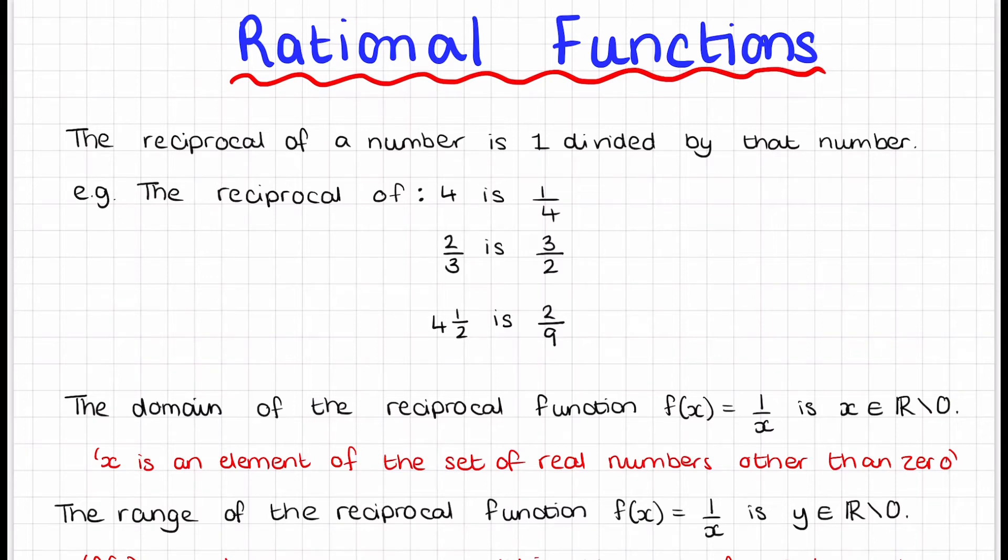This video is the start of rational functions and we'll look at the reciprocal, limits, and asymptotes. The reciprocal of a number is 1 divided by that number. For example, the reciprocal of 4 is 1 quarter, 2 thirds would be 3 on 2, and 4 and a half written as a single fraction is 9 on 2, so its reciprocal would be 2 on 9.